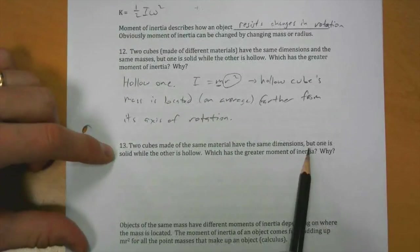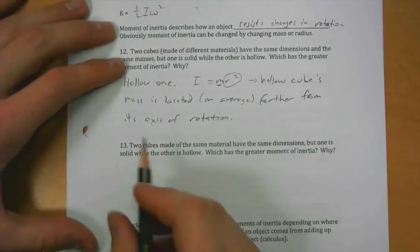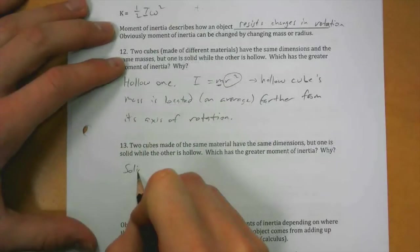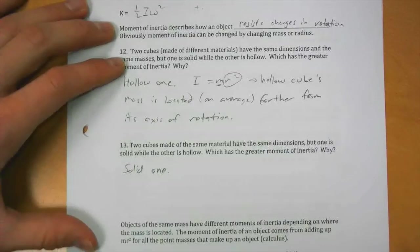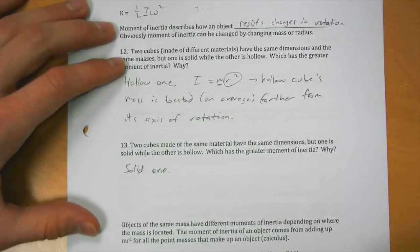Now if they have the same material, the same dimensions, one is solid while the other is hollow, then the solid one will have the greater moment of inertia. Now why?